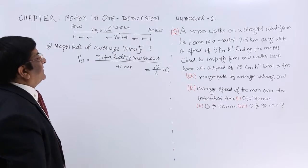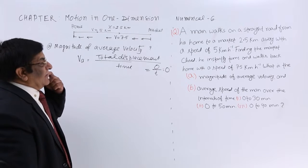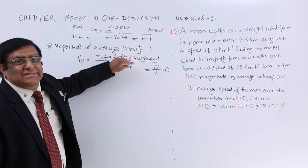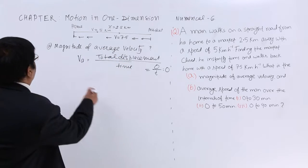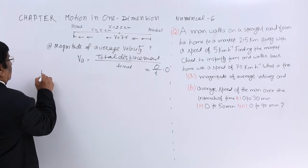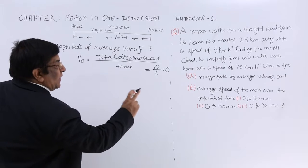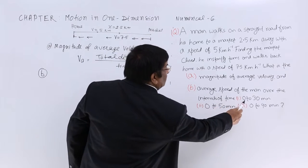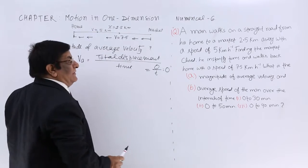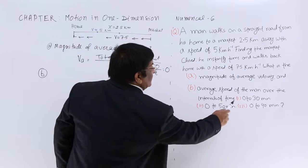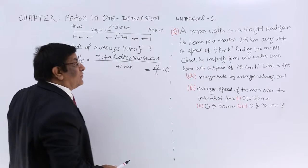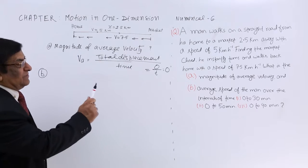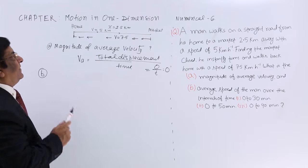What is the difference between speed and velocity? For speed, we use total distance, not displacement. When we come to part B, we need average speed for: 0 to 30 minutes, 0 to 50 minutes, and 0 to 40 minutes. First, we should find out where he is at 30 minutes, 40 minutes, and 50 minutes.